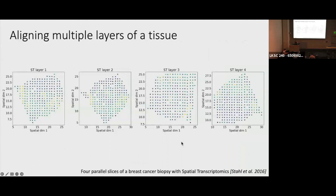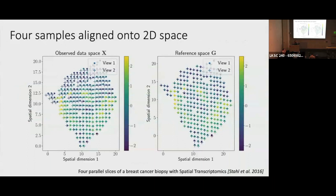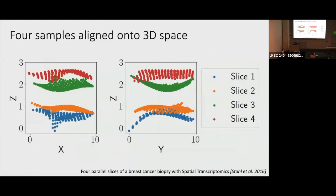We have four parallel slices of a breast cancer biopsy, and we did the obvious thing first: we aligned those four samples to a 2D space. This is what views one and two look like worked into this space — and this is what that reference space looks like, where we've layered on top of it views one and two and also colored based on a specific gene expression level. That's nice, but it doesn't get us to the atlas.